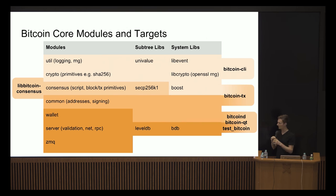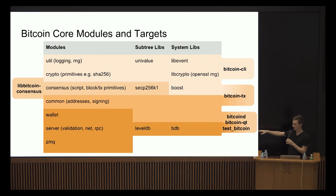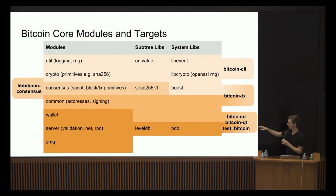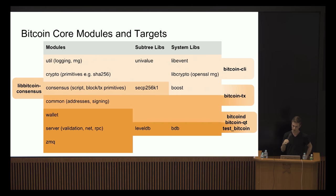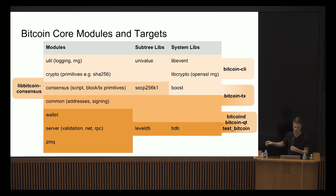Finally, all the other targets — and this list is not exhaustive — pretty much depend on everything: bitcoind, the server daemon that runs in the background, bitcoin-qt which is the GUI, and then a large number of test binaries which also depend on pretty much everything.